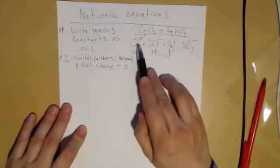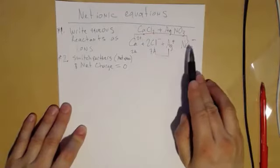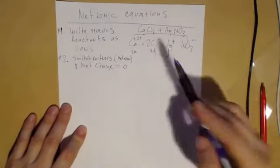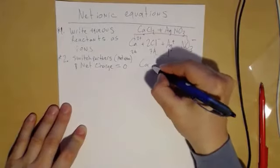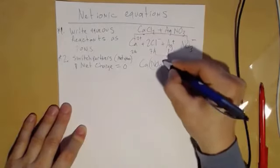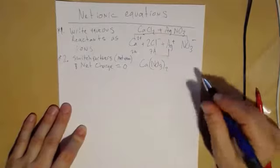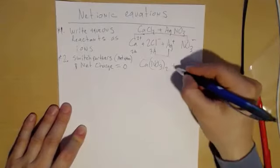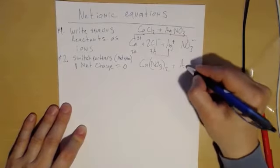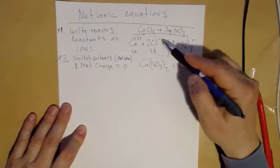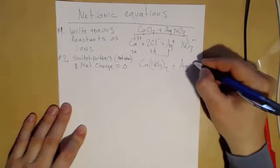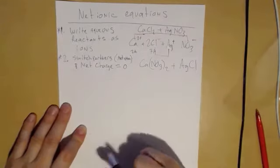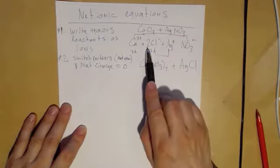So anyway, calcium is two plus, nitrate is minus. So I'm going to need two minus ones to go with one plus two. Let's see, Ca(NO3)2. And then the silver and the chloride are both plus one and minus one. Now remember I have to put the metal on the left. And if it's plus one and minus one, it's just one to one, AgCl. And so I'm going to ignore that coefficient of two.